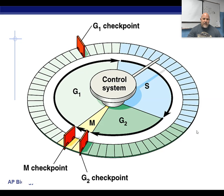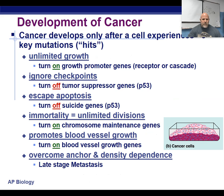If that's the case, what happens is we end up with a lot of mutations being pushed forward into a particular cell line. In order for a tumor to really develop to a serious state, it needs multiple mutations to happen.